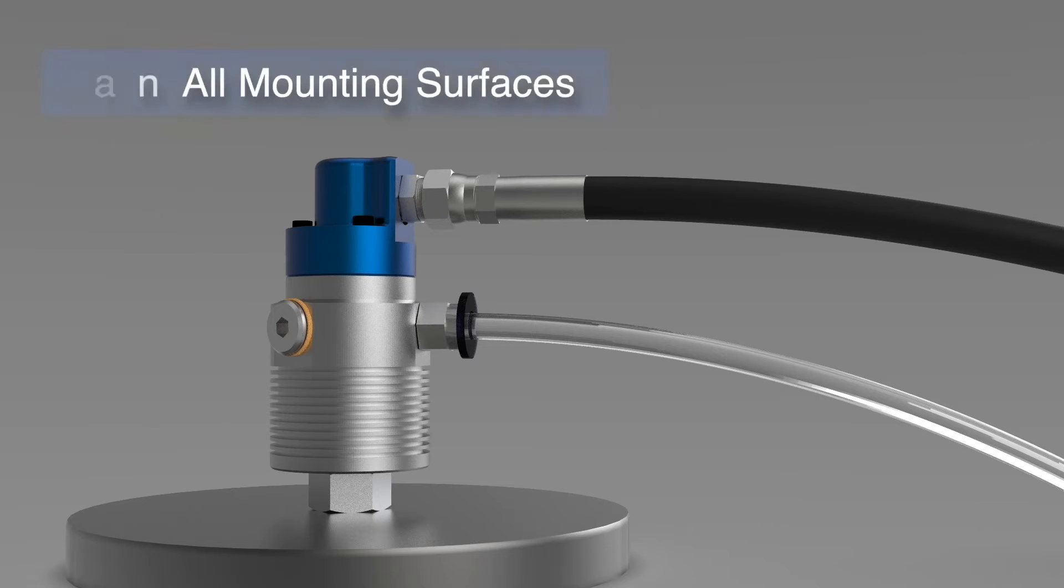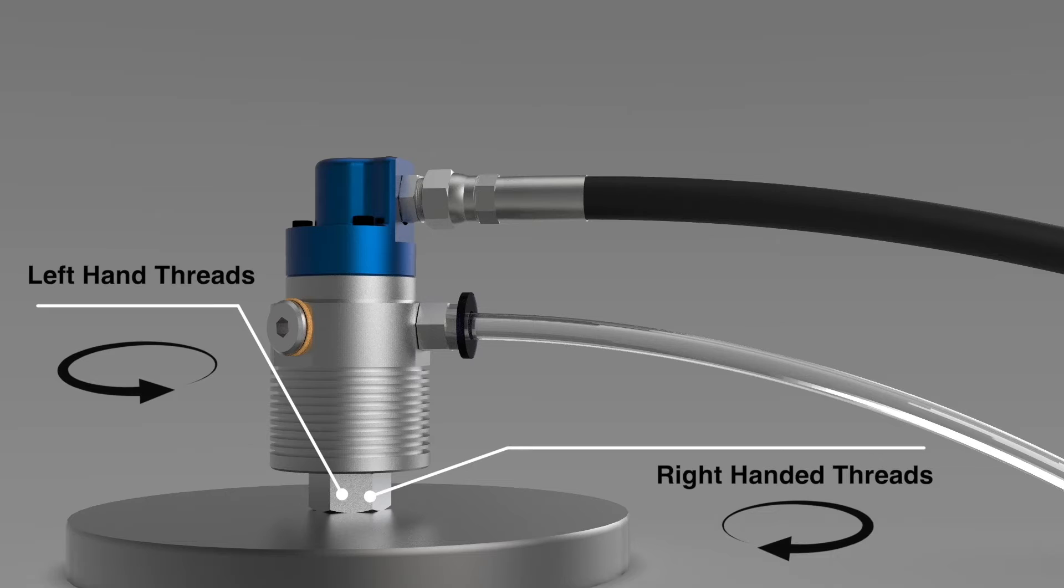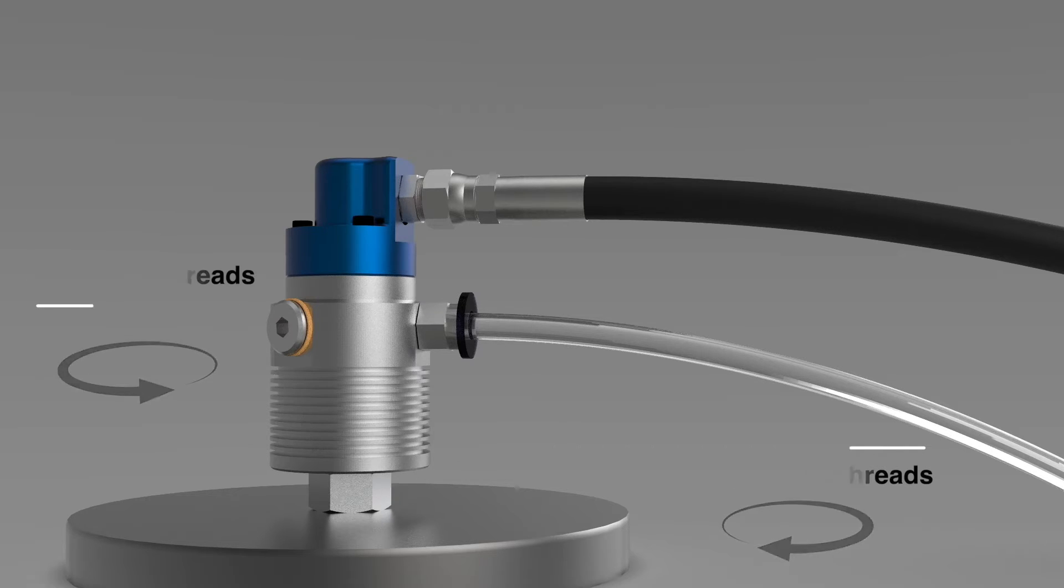Make sure all mounting surfaces are clean with no chips, dents, or debris that could cause run out and vibration. Make sure the thread direction matches the machine. Some jubilant unions are available with either left hand or right hand threads. Tighten the rotor to the correct torque. Contact Norman G Clark if you are unsure of the correct torque value.